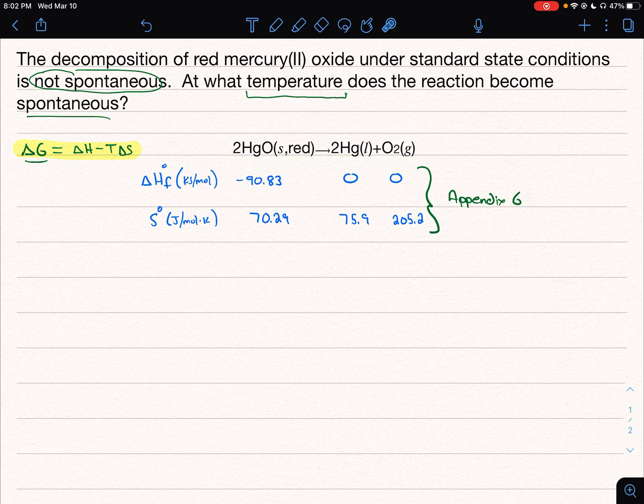And what we're going to do first is we're going to find delta H of reaction, and then we'll find delta S of reaction. And then finally, we can come back to our delta G equation. To find delta H of reaction and delta S, remember, it's just products minus reactants. So delta H of reaction is going to be the sum of our products minus the sum of our reactants.